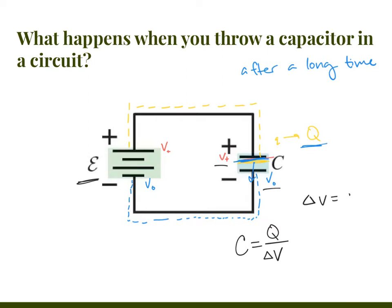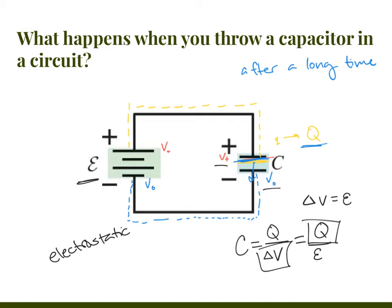Delta V equals the EMF of the battery. Therefore, capacitance equals Q divided by EMF. Charge flows around the circuit until we reach this Q value, at which point the voltage across the capacitor equals the voltage across the battery, and everything will be in electrostatic equilibrium — where conductors have all their charge spread out so nothing moves anymore. At that point, no more current goes through the circuit. The capacitor gets completely charged, and then everything is still.